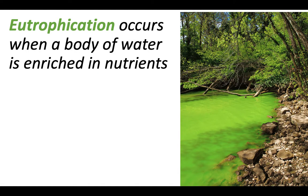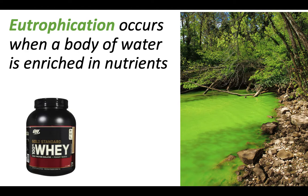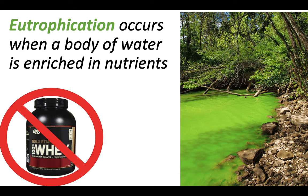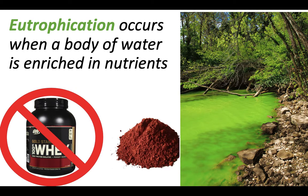Eutrophication is Greek for 'well nourished,' and it occurs when a body of water is saturated — totally enriched, perhaps super saturated — with nutrients. Not the whey protein you're using after the gym to get totally swole, but things like nitrogen and phosphorus, which are essential nutrients for plant growth and for development of any organism.